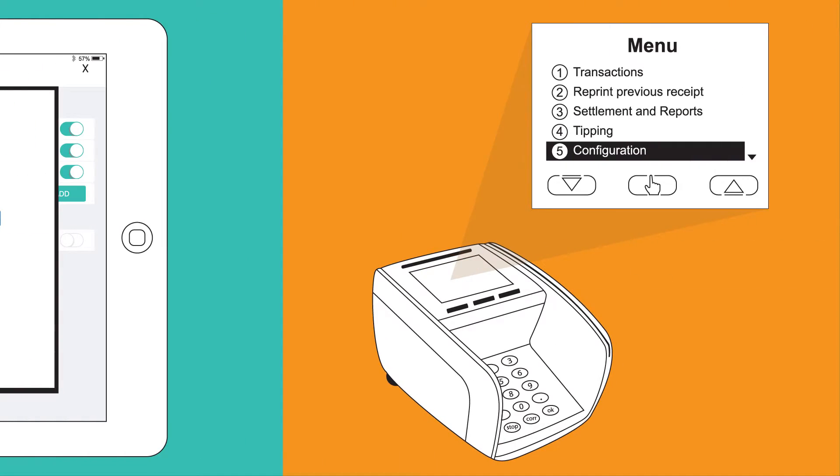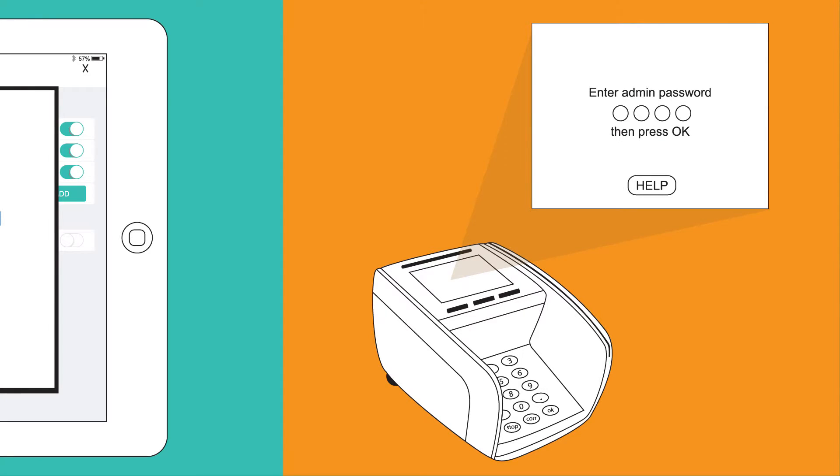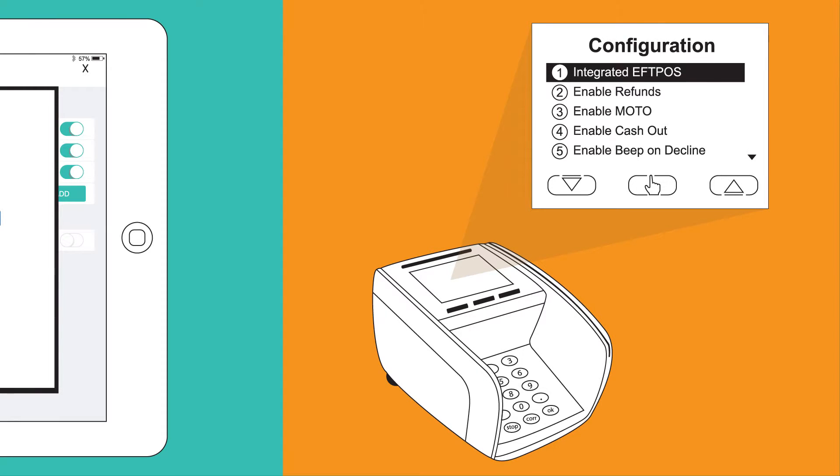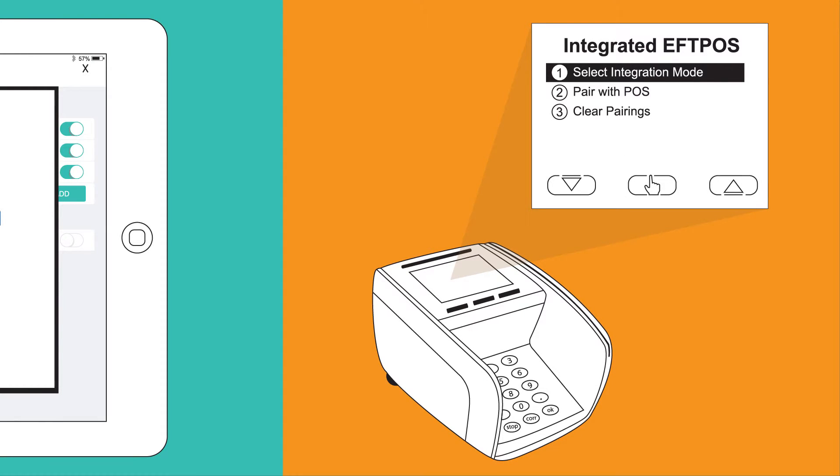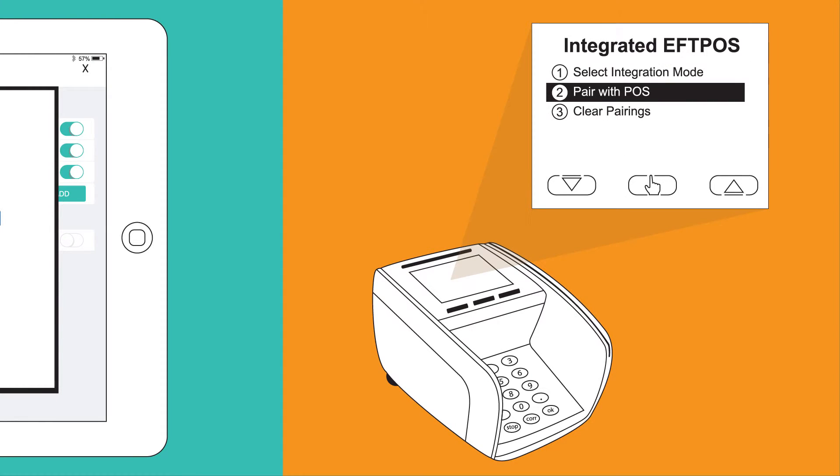Now go to your terminal and navigate to the Integrated FPOS, which will give you the terminal and merchant IDs.